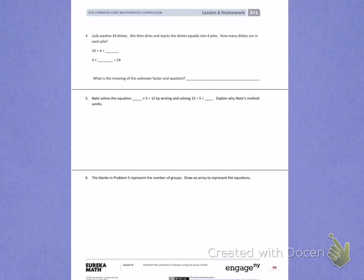Number 4. Judy washes 24 dishes. She then dries and stacks the dishes equally into 4 piles. How many dishes are in each pile?